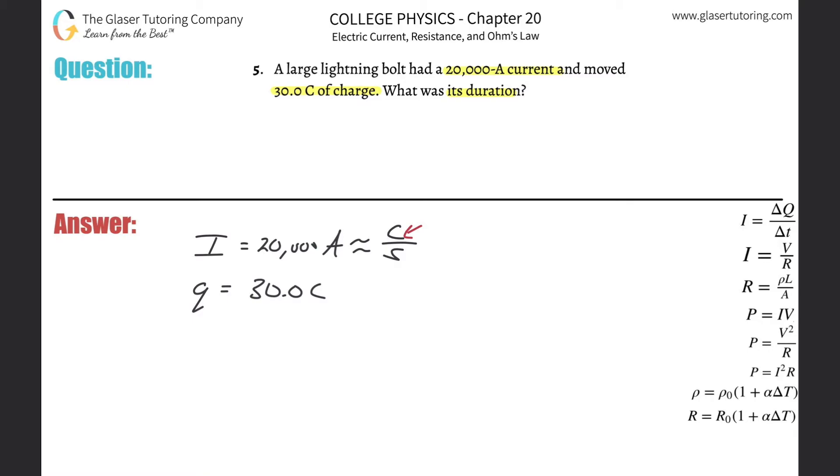Well, easy. If you know how much charge passed per second, and you know that the total amount of charge that passed was 30 coulombs worth, how would we find that out?